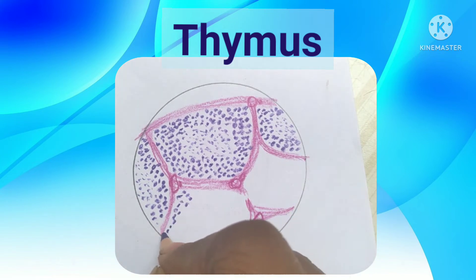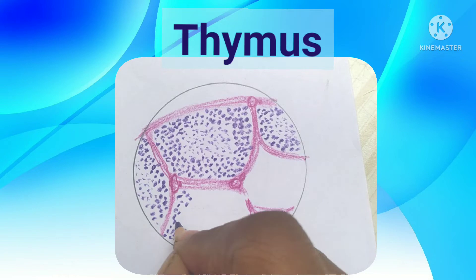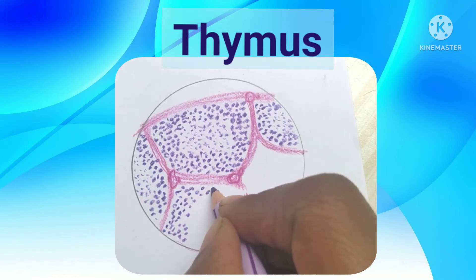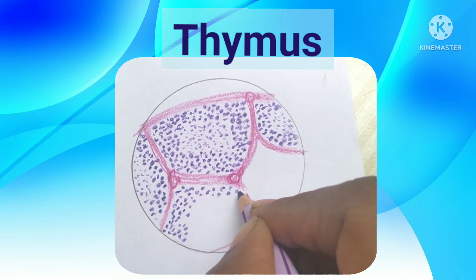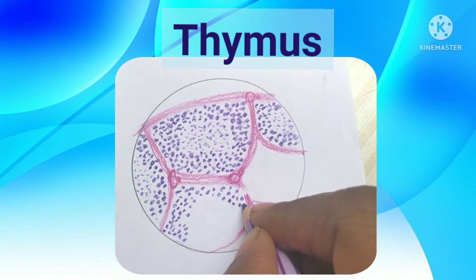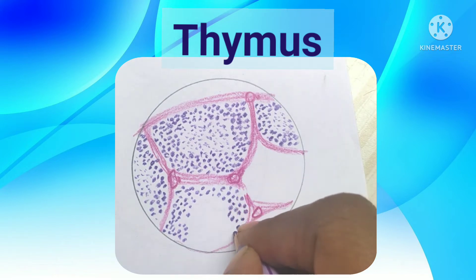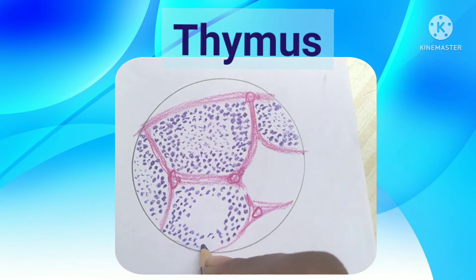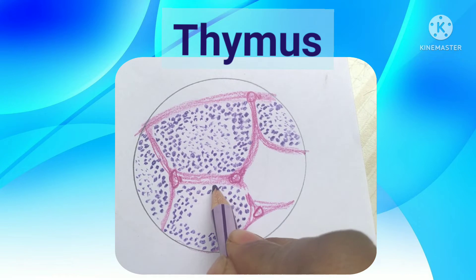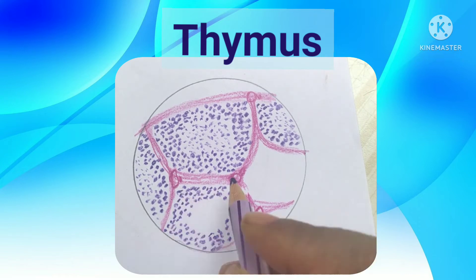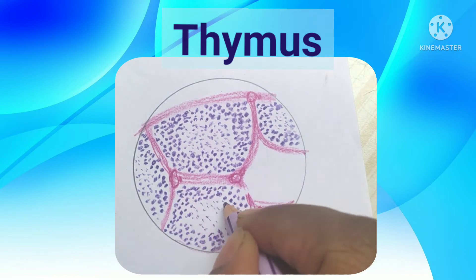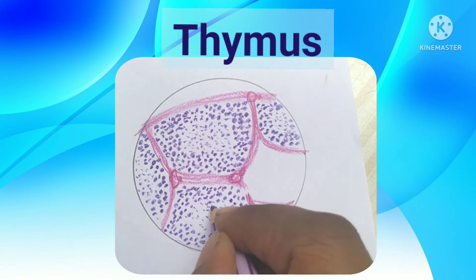In the cortex, the number of lymphocytes will be more. The lymphocytes synthesized in the bone marrow migrate to the thymus during embryonic life and are educated there. More than 98% of the T-cells undergo apoptosis and are phagocytosed by macrophages. So in the medulla, there will be very few lymphocytes.